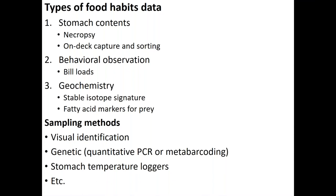Food habits are generally studied with stomach contents — necropsy, on-deck capture and sorting, behavioral observation like bill loads, biogeochemistry like stable isotopes or fatty acids. There's a growing hodgepodge of methods to be combined, each with different sampling approaches including visual, genetic, and stomach temperature loggers. All of these beg for a statistical framework that can combine multiple data types.